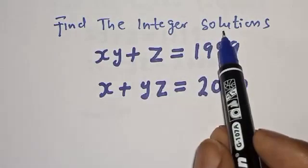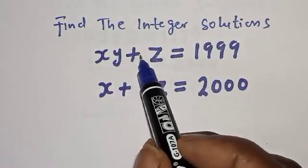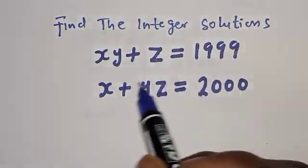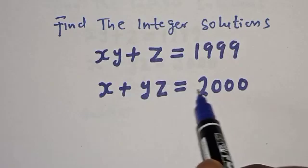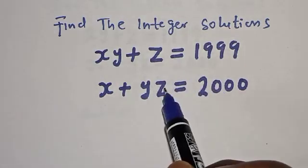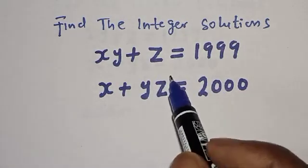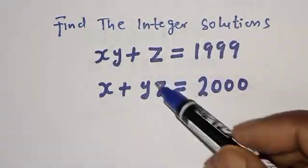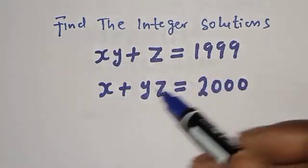Find the integer solution: xy plus z is equal to 1999, and x plus yz is equal to 2000. Hello, welcome to Magist. In this class, we want to find the integer solution from this given equation.